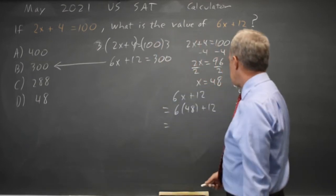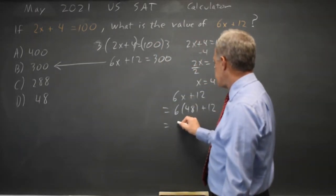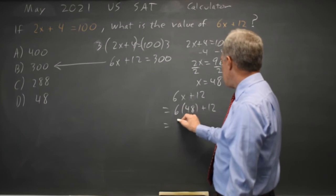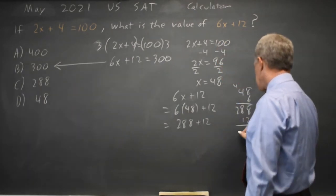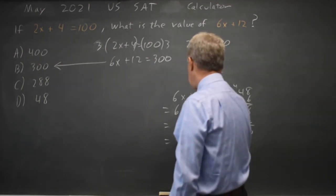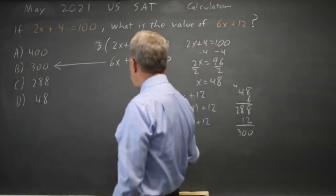But they're not asking for 6x. They're asking for 6x plus 12. 288 plus 12 is 300. And again, that's choice B.